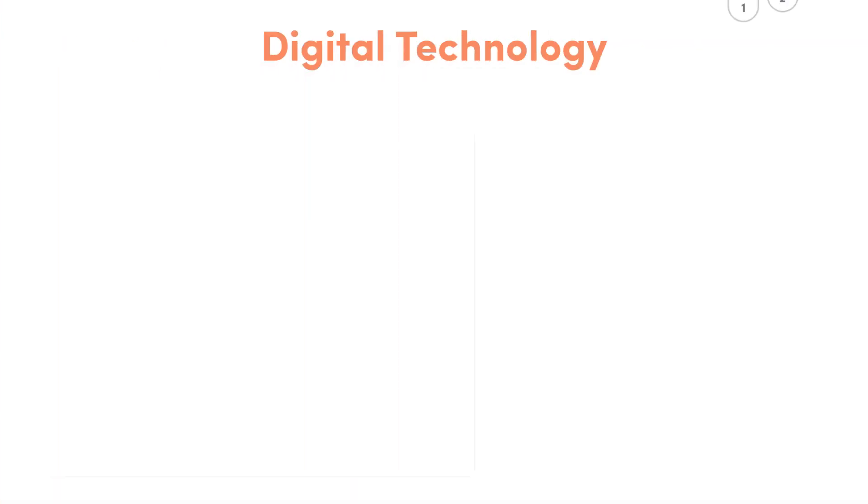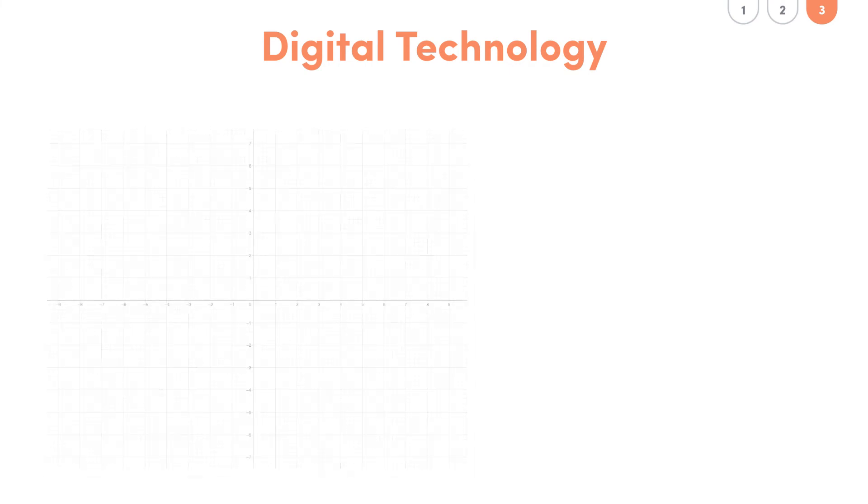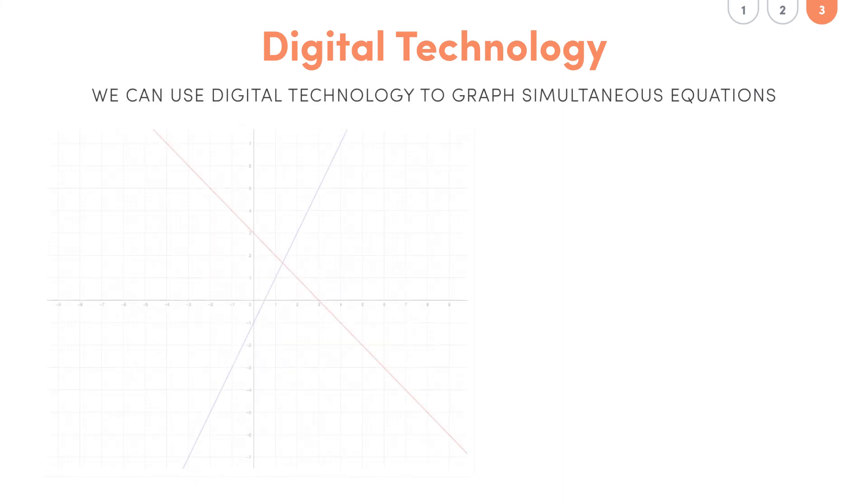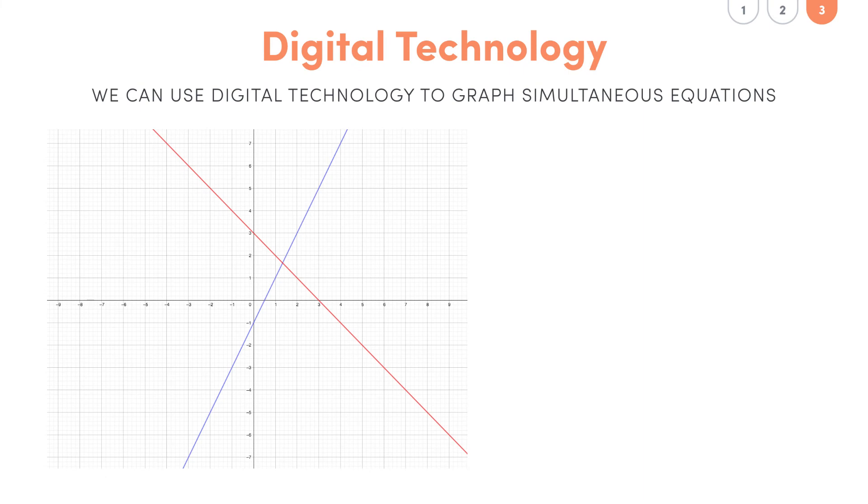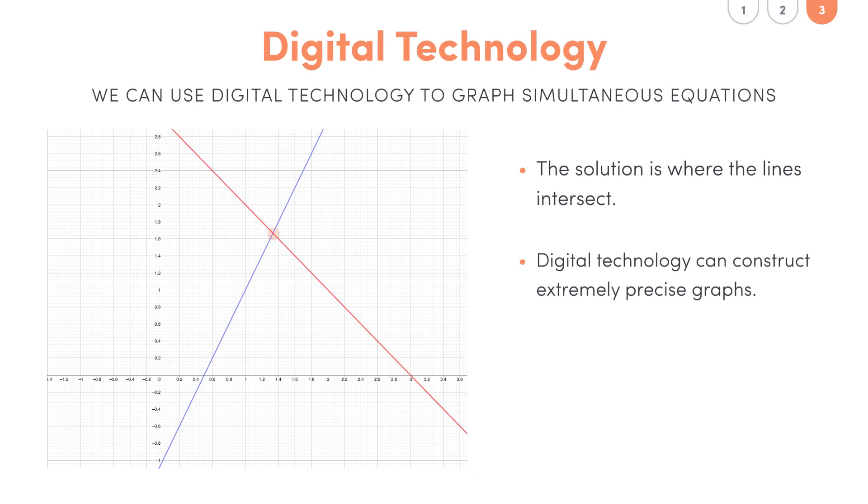So basically all you need to know about this is remember in year 11 when we saw that there is software which graphs lines for us? Well, the same software can be used to construct two lines on the same graph just like we did previously. So remember, if we want to read a solution off these graphs then all we need to do is see where the lines intersect. Using digital software for this is really handy because it can construct precise graphs and find where the exact point of intersection is.